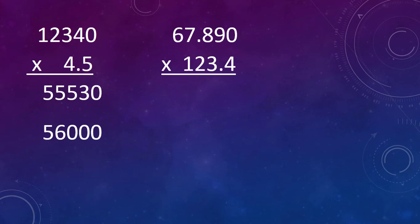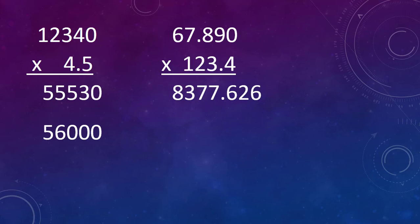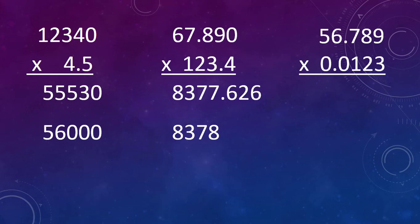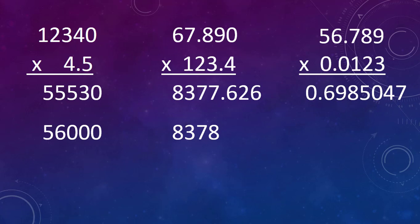In the second problem, the first number has five significant figures and the second number has four. When we calculate it out we get a whole bunch of numbers, but we want to round our answer to four significant figures. So instead of 8,377.66, we round to 8,378. In the last one, the first number has five significant figures and the second number has three. So when we get this really long decimal, we round it to three significant figures, giving us 0.699.